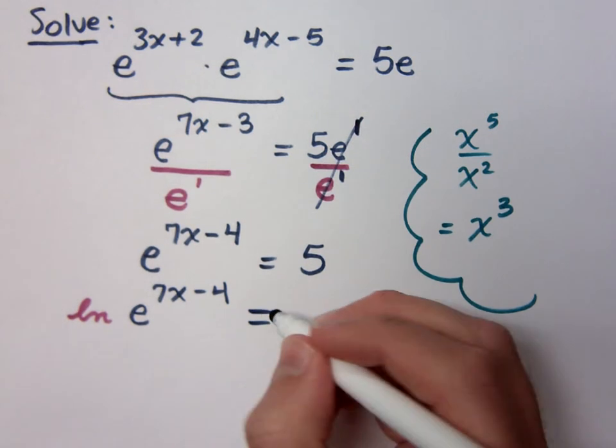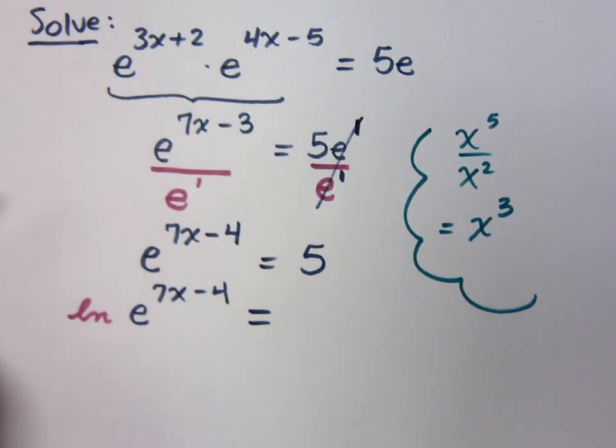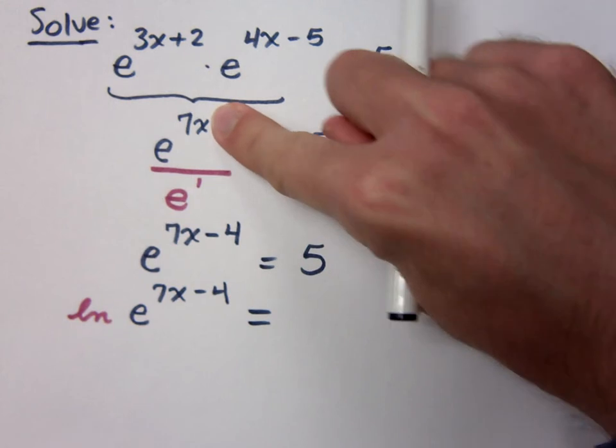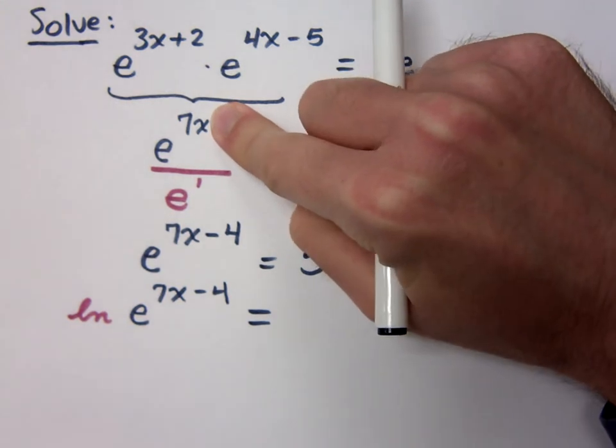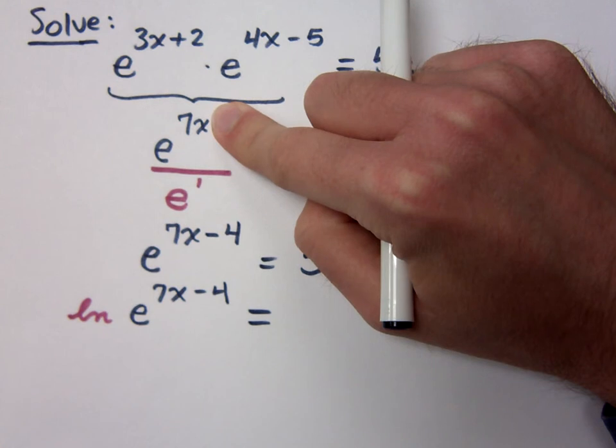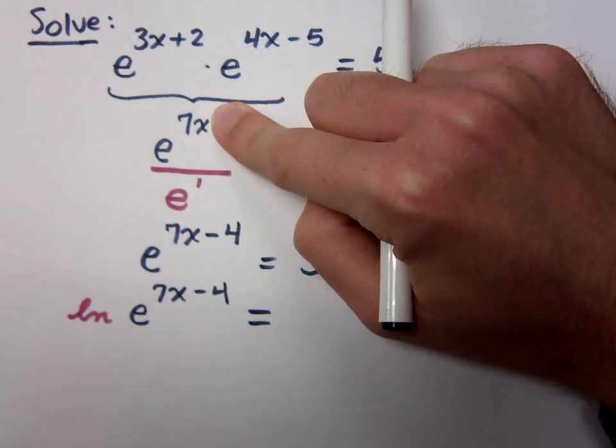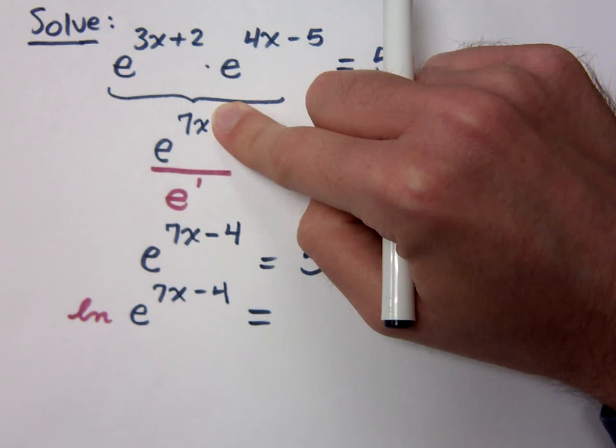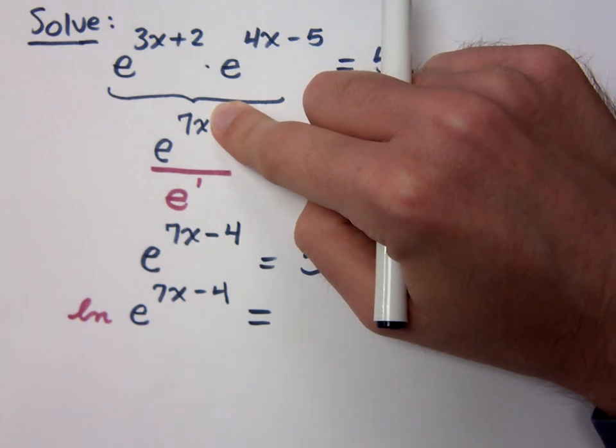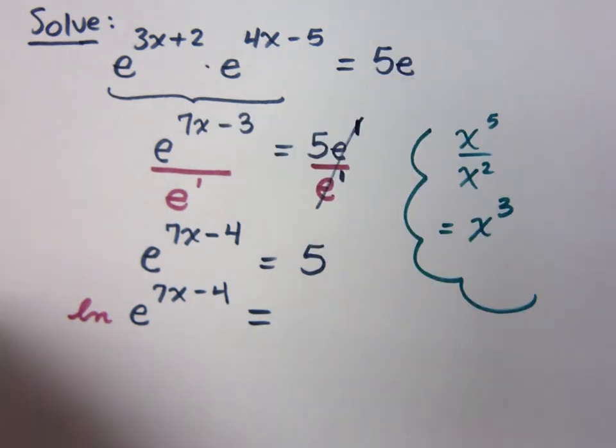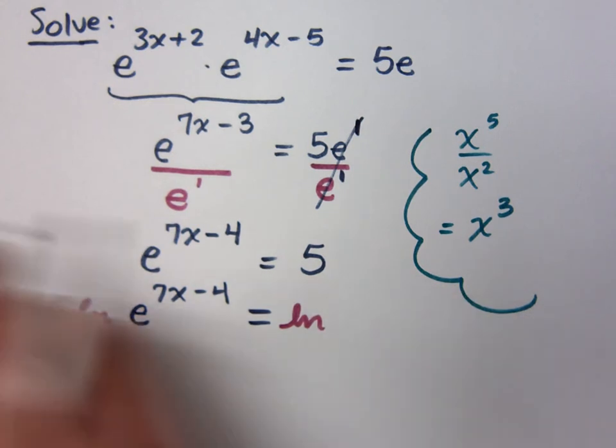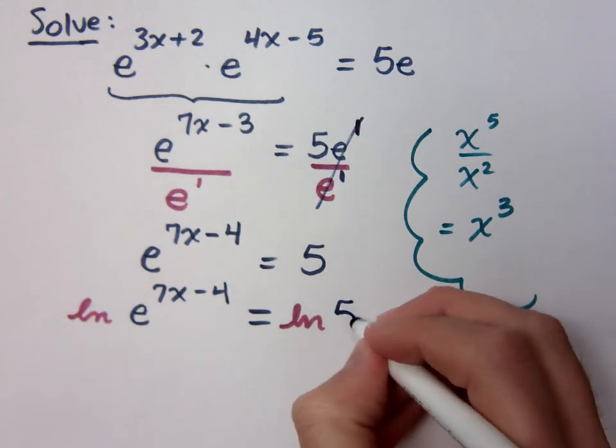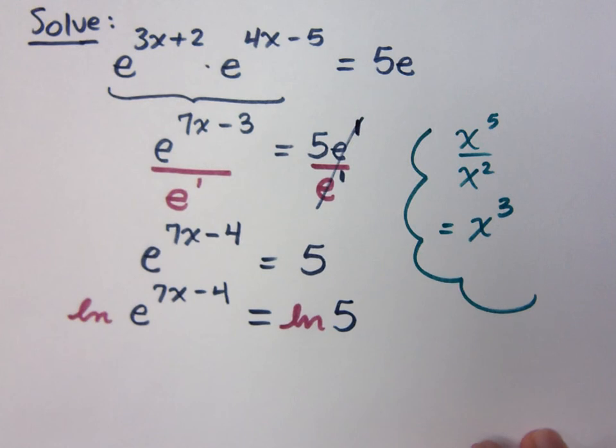So if on the left side, if it wasn't like 7x minus 3, it was just 7x, then it would be the same thing? If I had e to the 7x over e, it would be 7x minus 1. Because when you divide with the same base, you subtract the exponents. Then you just combine the like terms. You know that it's just a 1. Now, I didn't have to do it this way. I could have done it a different way, but it still ends up being the same thing.